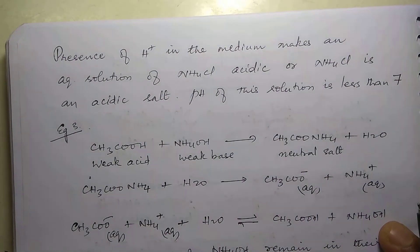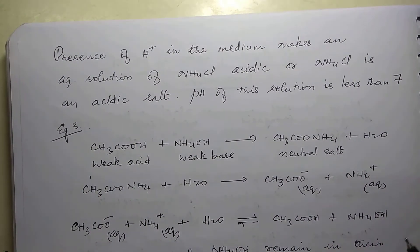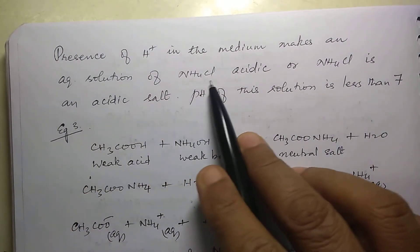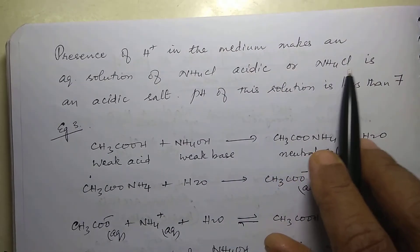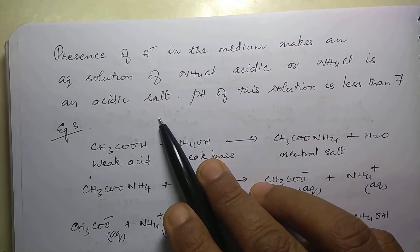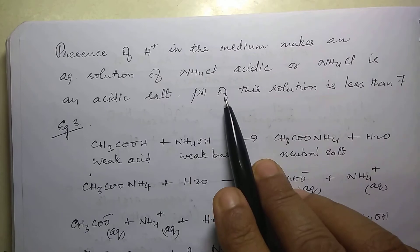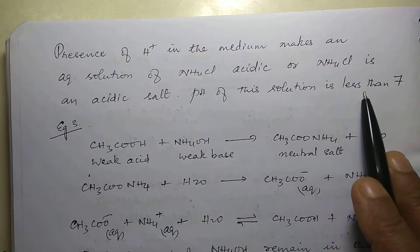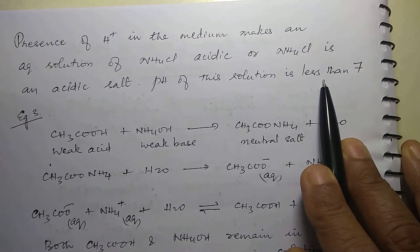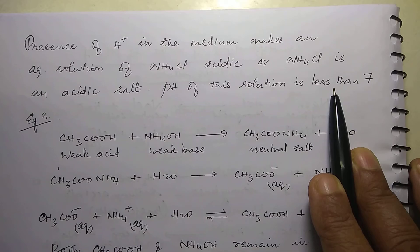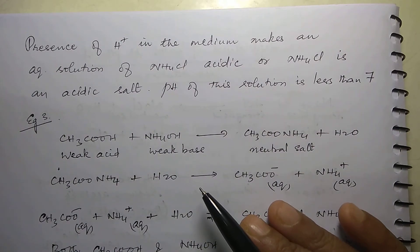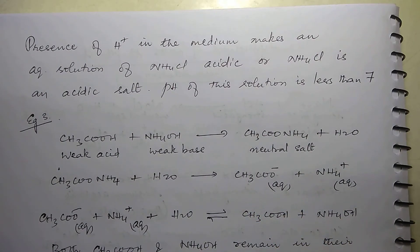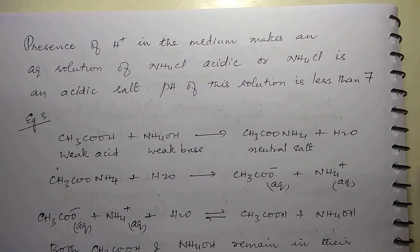The presence of H⁺ in the medium tells us that an aqueous solution of NH₄Cl is acidic, or NH₄Cl is an acidic salt. So what will be the pH of this solution? It will be less than 7. pH 7 is neutral, less than 7 is acidic, and more than 7 is basic.